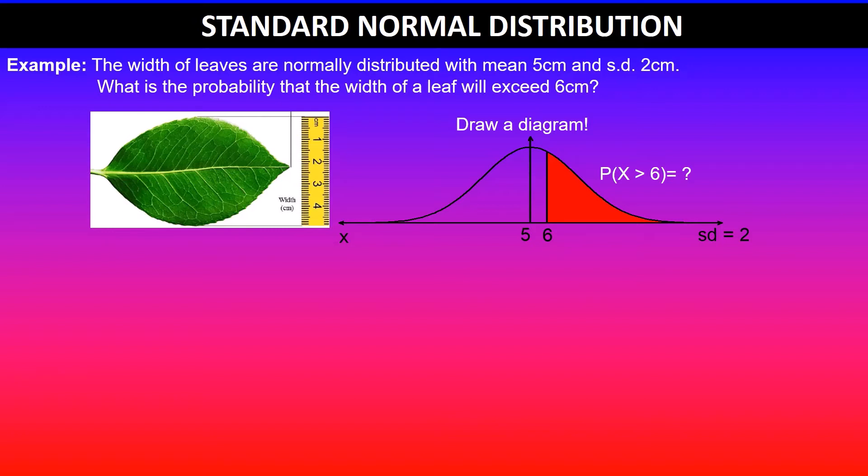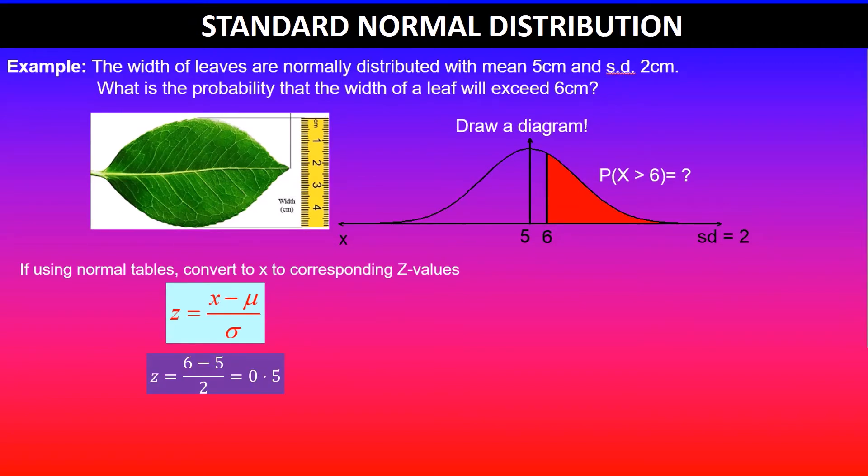Next, use the z formula to find the corresponding z values: z equals x minus mean over standard deviation. It's a basic formula. In this case, our x value is 6, so z = (6 - 5) / 2, where 5 is the mean and 2 is the standard deviation.